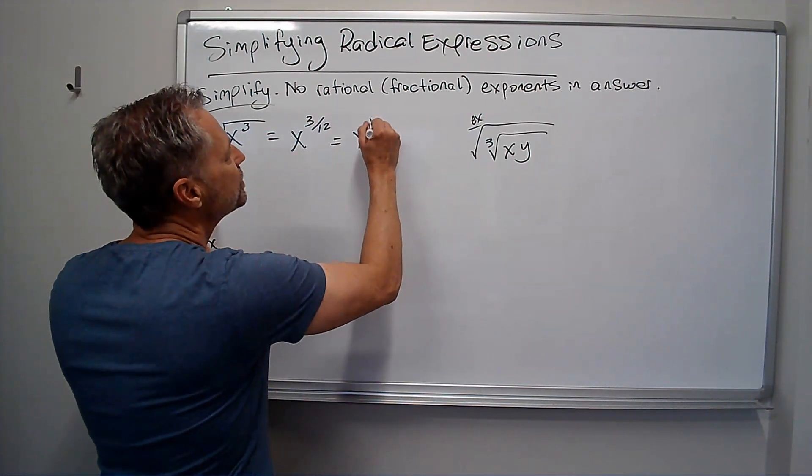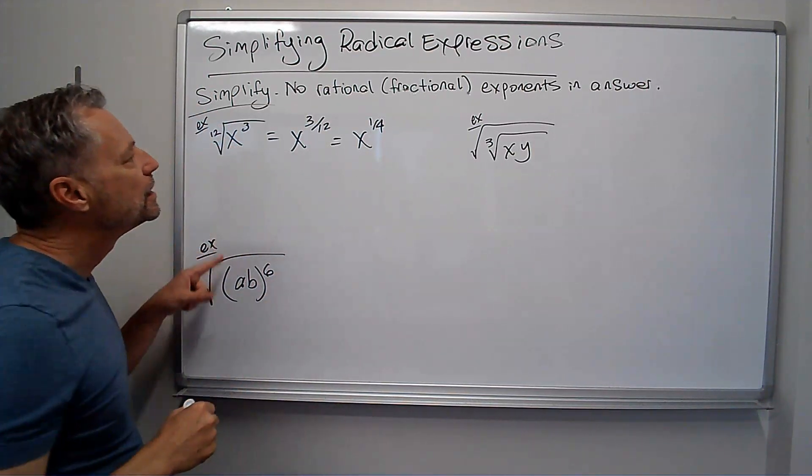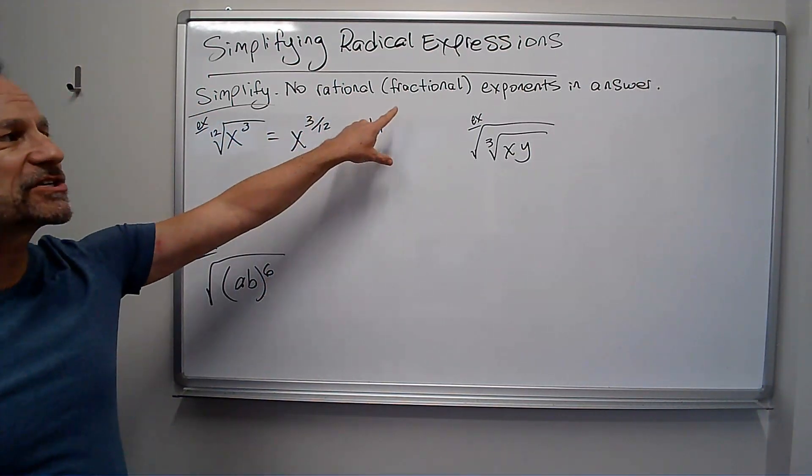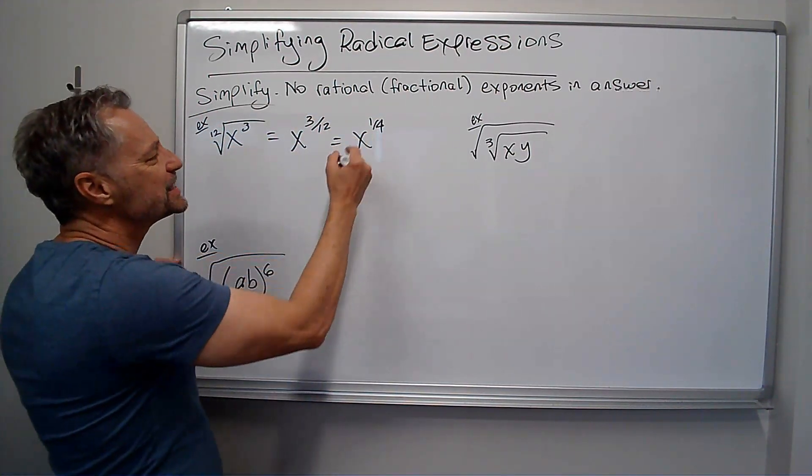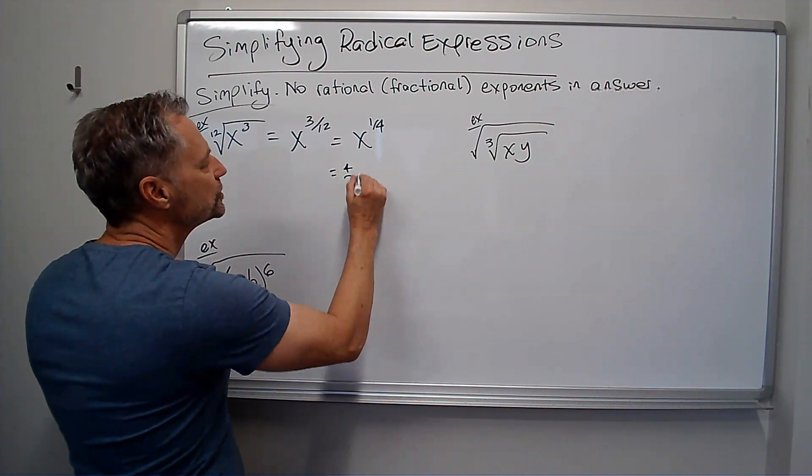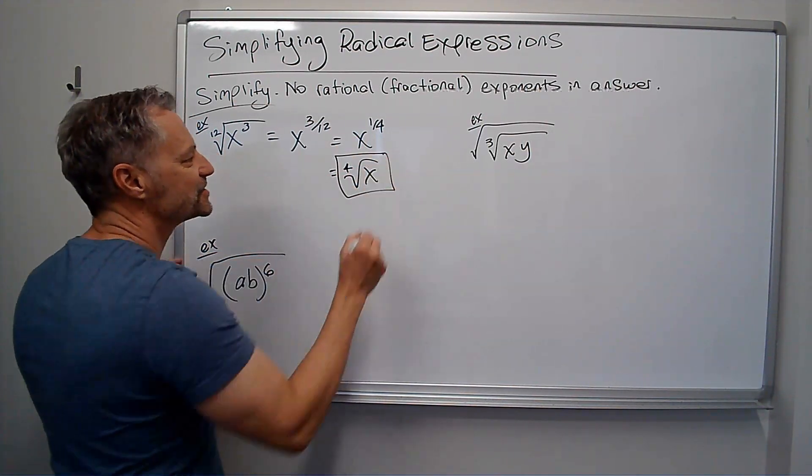So this is x to the one-fourth, and it says no rational or fractional exponents are allowed in the answer, so remember that's just the fourth root of x, and we'll leave that as our answer.